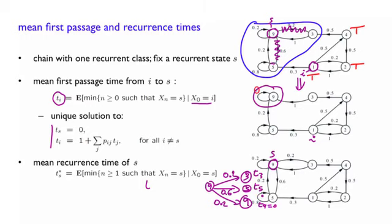So from that tree, what you have is t9 star will be 0.2 times t3, plus 0.6 times t5, plus 0.2 times t9, plus, of course, 1, because you have done one transition. Where, again, this value of t3, t5, and t9 are the ones corresponding to this solution here. So, of course, t9 is 0.